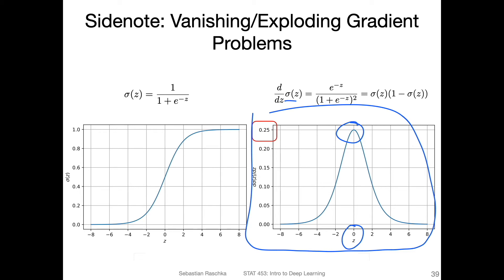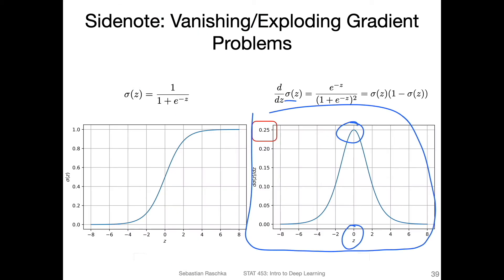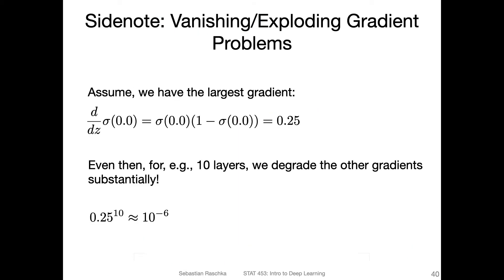So if we have something like this here, where we have this term, we have a number that is always smaller than one, right? In this case, this can lead to a so-called vanishing gradient problem because then we multiply a number with a number smaller than one multiple times if we have many layers.